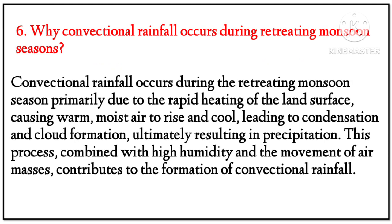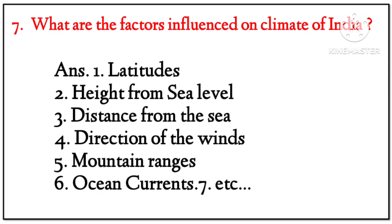Question 6: Why does conventional rainfall occur during the retreating monsoon season? Answer: Conventional rainfall occurs due to the rapid heating of the land surface, causing warm moist air to rise and cool, leading to condensation and cloud formation, ultimately resulting in precipitation. High humidity and movement of air masses contribute to this conventional rainfall.